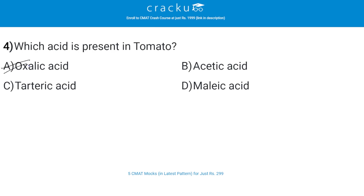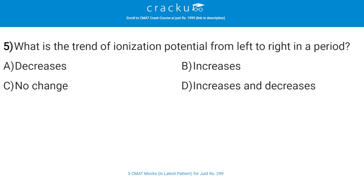The next question: which acid is present in tomato? The correct answer is A — oxalic acid. Tomatoes contain more than 10 types of acids including citric acid, malic acid, ascorbic acid, and oxalic acid. The oxalic acid content of tomatoes is about 50 mg per 100 gram serving.